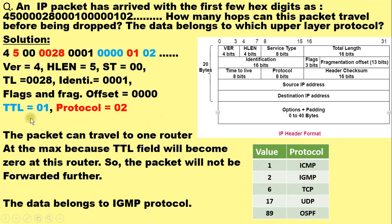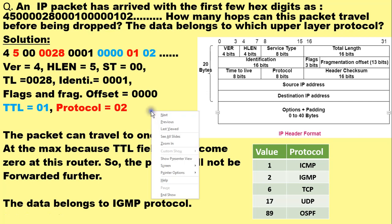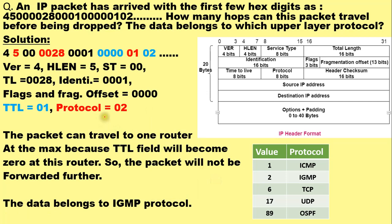The TTL field has value 01, meaning the packet can travel a maximum of one hop before reaching the destination or being dropped. To understand the TTL field: suppose a packet is transmitted by a source meant for a destination three hops away, with three routers in between.